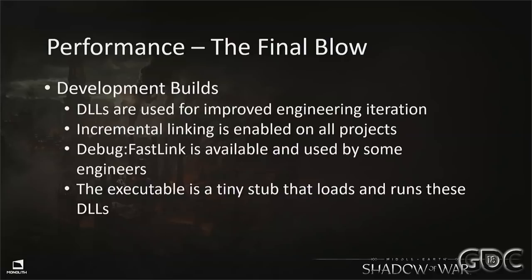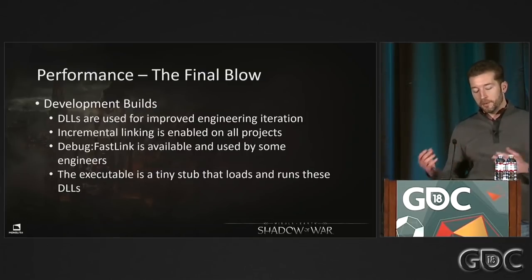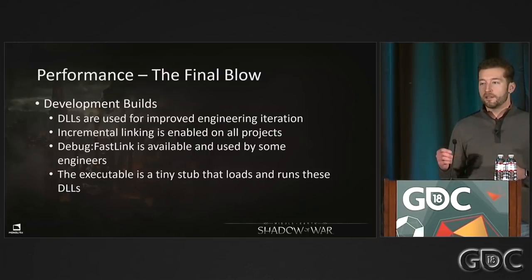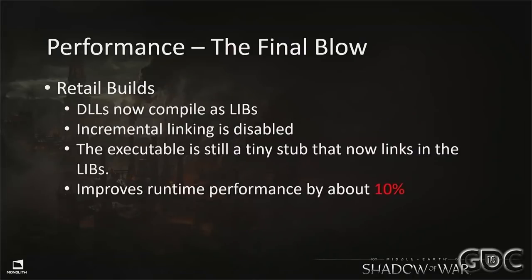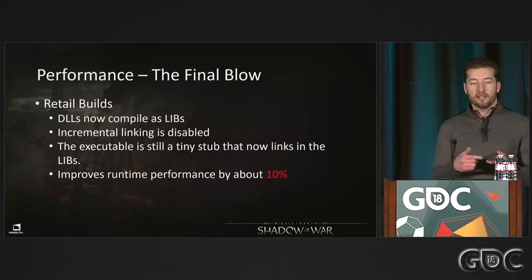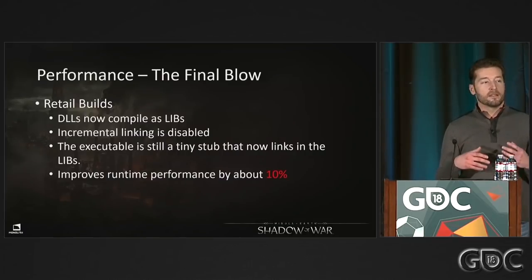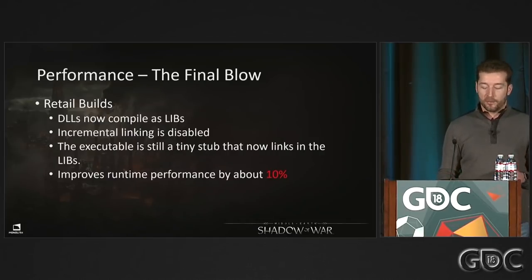In development builds we use DLLs for fast iteration — change one CPP file, rebuild just that DLL, with incremental linking and debug fast mode. Great for iteration, terrible for performance. For retail builds, we convert those DLLs to libs, turn off incremental linking, and link them into the executable. The linker only pulls in referenced code, effectively dead-stripping our 20-year-old codebase. That alone gives about a 10% performance boost by eliminating dead code and DLL boundary overhead.